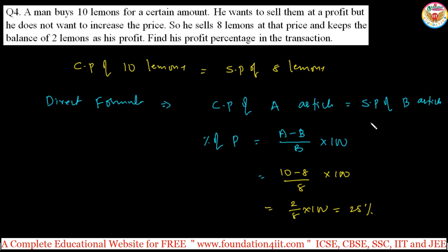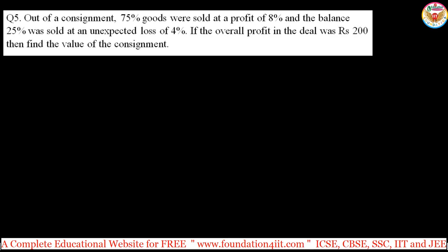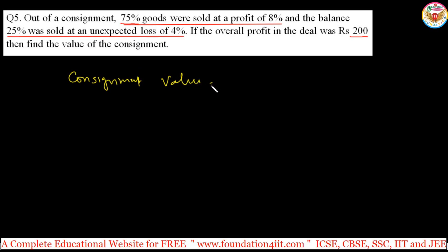One more sum — fifth question. Out of a consignment, 75 percent of goods were sold at a profit of 8 percent and the balance 25 percent was sold at a loss of 4 percent. The overall profit is 200. Find the value of the consignment. When part of the articles are sold at profit and the remaining at loss, you can use this direct method. The consignment value equals total profit into 100 divided by the combined parts formula.